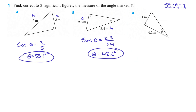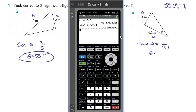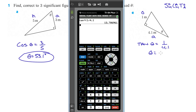For E: from our angle, this is opposite, this is the hypotenuse, so that makes this the adjacent. The opposite and adjacent are the two that we know, so that's tangent. Tangent theta equals opposite, which is 1, over adjacent, which is 4.1. So theta equals second tangent of 1 divided by 4.1, which is 13.7 degrees.